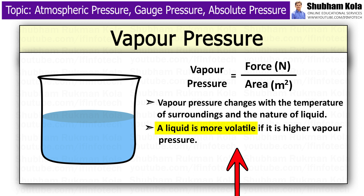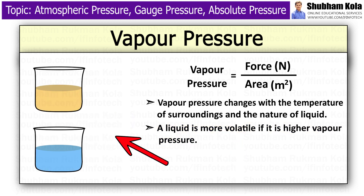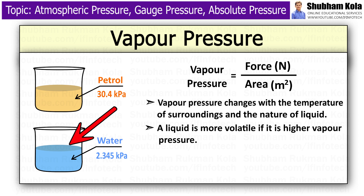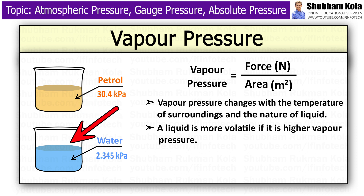A liquid is more volatile if its vapour pressure is higher. For example, vapour pressure for petrol at 20 degrees Celsius is 30.4 kPa, while that of water is 2.345 kPa. For this reason, petrol vaporises faster than water.